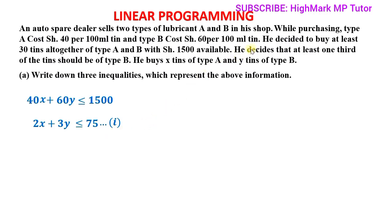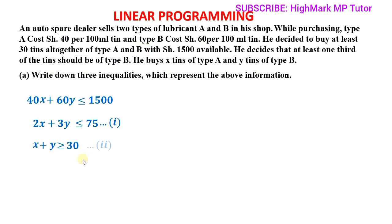The second inequality comes from the statement that he decided to buy at least 30 tins altogether of type A and B. We have X tins of type A added to Y tins of type B, and this should be at least 30 tins. At least 30 means greater than or equal to 30, giving us x + y ≥ 30 as our second inequality.